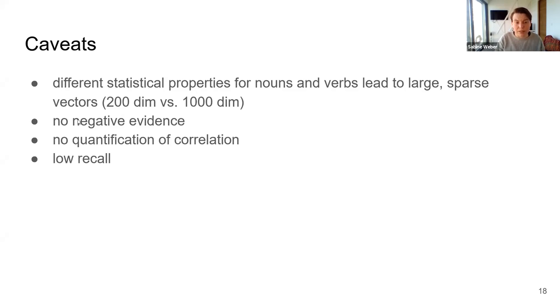Another point that makes our approach different from the noun approach of Geffet and Dagan is that we don't use negative evidence, which again hinges a bit on these vectors being very large. Because if we wanted to go ahead and search for a meaningful amount of our missing features, we would have to do lots of web searches and include lots more data, which at least at this point in time is infeasible.